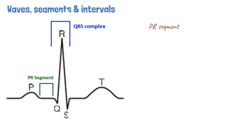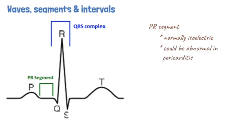The PR segment represents the duration of conduction of electrical impulses from the AV node to the bundle branches. The PR segment is isoelectric under normal circumstances, but deviation can occur in the presence of pericarditis and atrial ischemia.